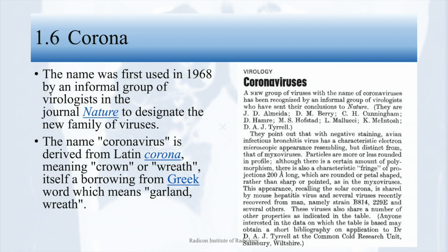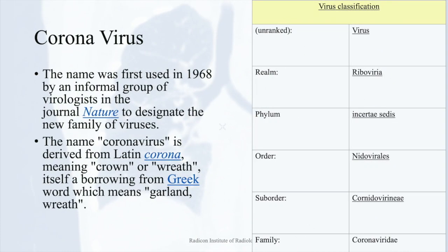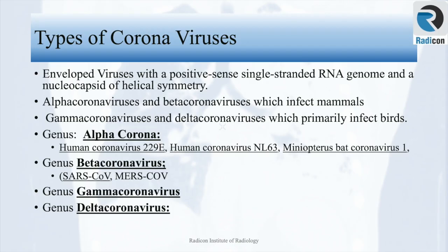The name coronavirus was first used in 1968 by an informal group of virologists in Nature to designate a new family of viruses. The name is derived from the Latin word corona meaning crown, which itself is borrowed from a Greek word meaning garland. Coronaviruses are divided into four types: alpha and beta coronaviruses, which infect mammals, and gamma and delta coronaviruses, which primarily infect birds.